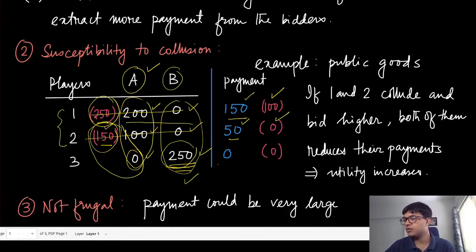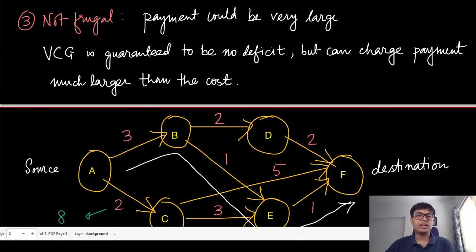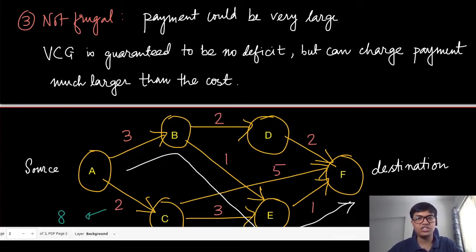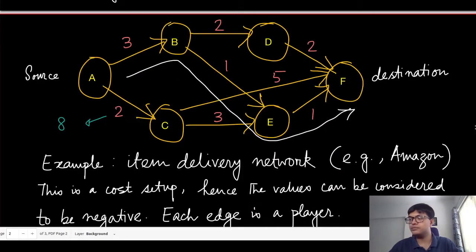The third limitation is that VCG is not frugal. By frugality we mean the payment collected by the mechanism is not the minimum possible payment. It will certainly have no deficit, but the total payment or surplus that can be extracted could be huge.